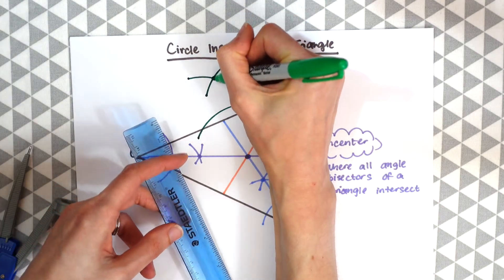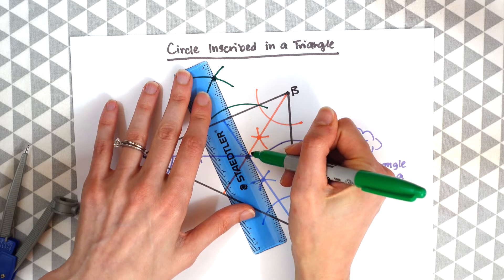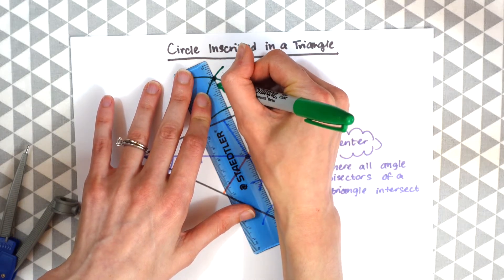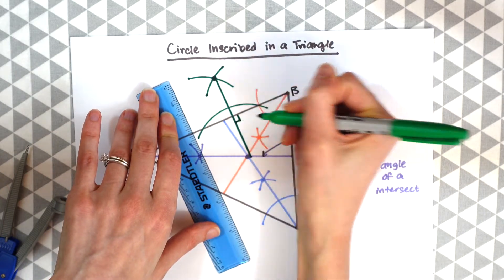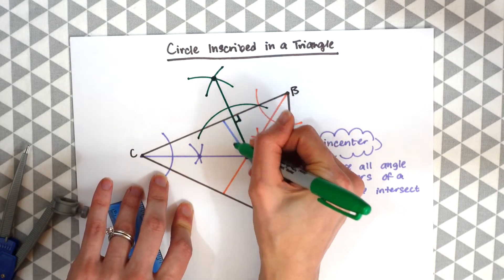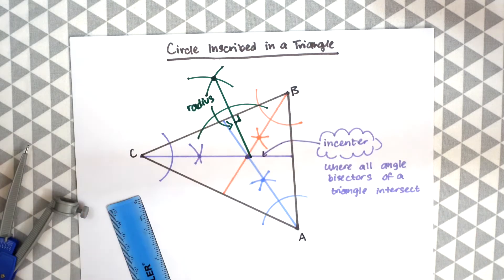So now we're just going to connect our point from the incenter to the point we just made. And this point we just made is a perpendicular line and this value right here inside the triangle is going to be the radius of our circle.